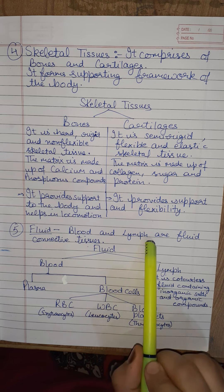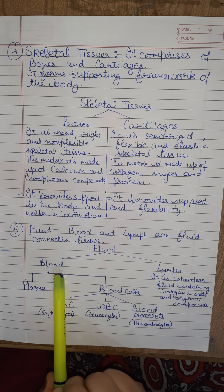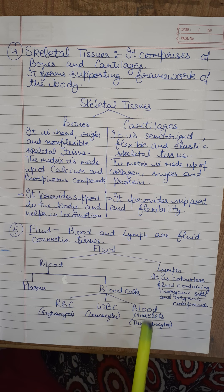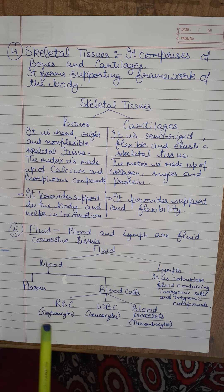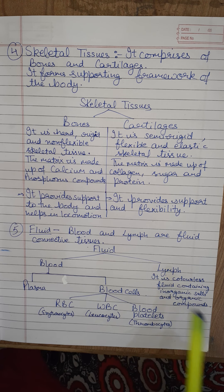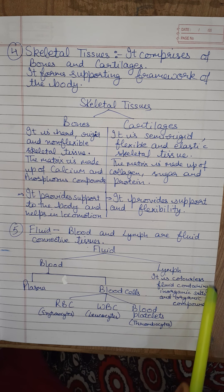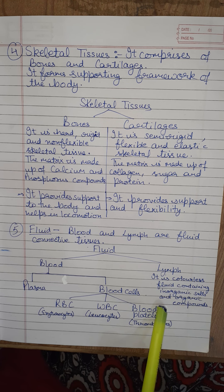Now fluid connective tissues: blood and lymph. Blood consists of plasma and blood cells. Blood cells are of three types: RBCs (erythrocytes), WBCs (leukocytes), and blood platelets (thrombocytes). Lymph is a colorless fluid containing inorganic salts and organic compounds, present in our blood.